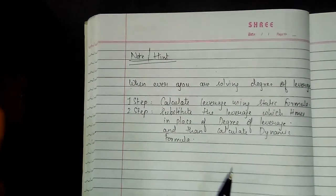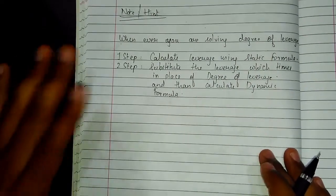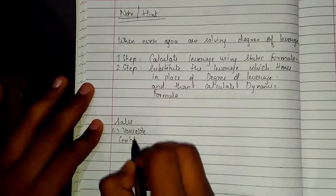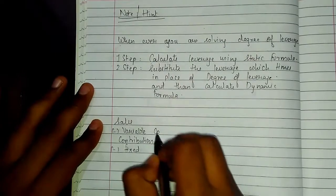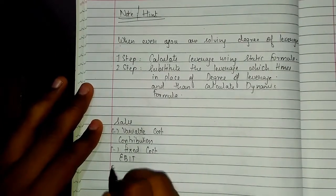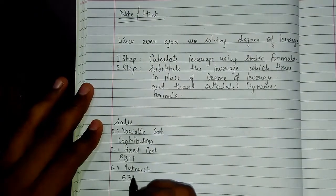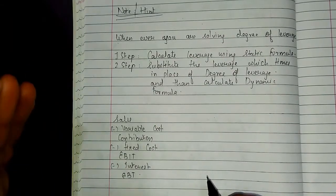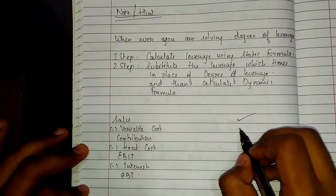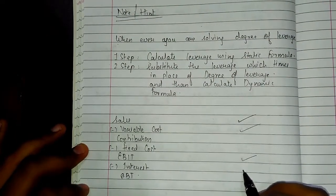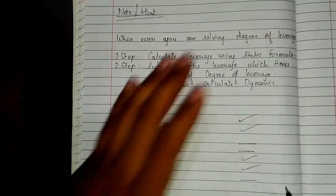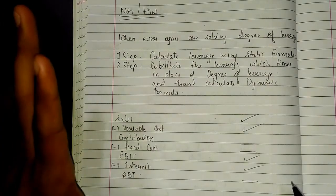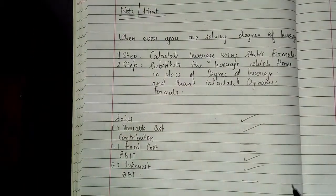A common question format is filling in blanks: sales less variable cost gives contribution, less fixed cost gives EBIT, less interest gives EBT. Sometimes the question gives you sales, variable cost, EBIT, and interest, and asks you to find all the missing figures. You have to find the missing figures in reverse order or in whatever manner is appropriate using the formulas.